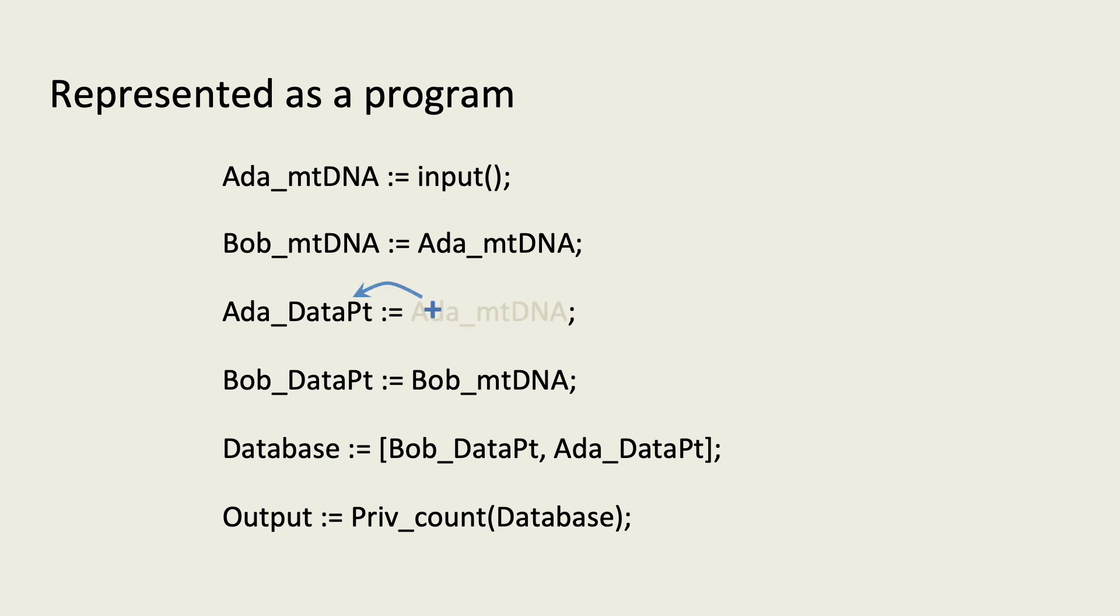Let's first consider setting Ada's data point to be a constant positive value. The intervention will flow down to other variables in the program, but it won't flow up to Ada's actual DNA. So looking at Ada's data point no longer tells us anything about her actual DNA, since the intervention broke the connection between the two.